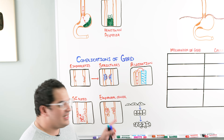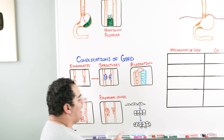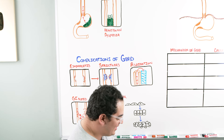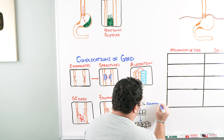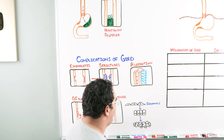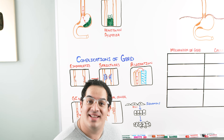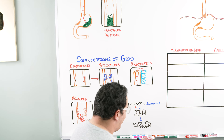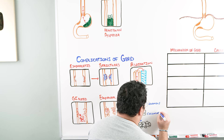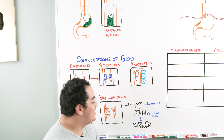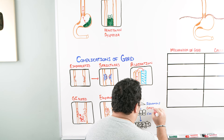Looking at the pathophysiology: normal cells of the esophagus are stratified squamous. When you expose these squamous cells over a long period of time to hydrochloric acid, the cells have to adapt. They undergo something called metaplasia — they change into a different type of cell called columnar cells. This process of going from squamous to columnar is called metaplasia.